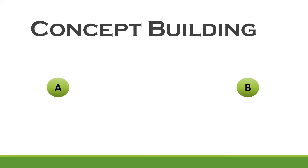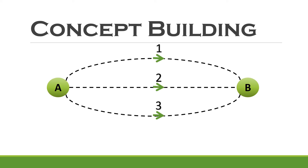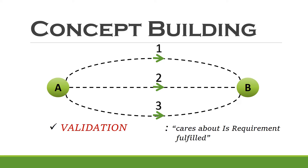Assume we have a requirement to travel from point A to point B. After analyzing, we have identified that there are 3 possible ways by which one can achieve this. By taking any of the routes, we are fulfilling the requirement of reaching point B. In technical terms, this is called Validation, where one is concerned only about whether the customer requirement is fulfilled or not.